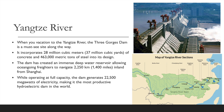When vacationing on the Yangtze River, the Three Gorges Dam is a must-see site. It incorporates 28 million cubic meters (about 37 million cubic yards) of concrete and 463,000 metric tons of steel. The dam has created an immense deep-water reservoir, allowing ocean-going freighters to navigate 2,250 kilometers (about 1,400 miles) inland from Shanghai. Operating at full capacity, it generates 22,500 megawatts of electricity, making it the most productive hydroelectric dam in the world.